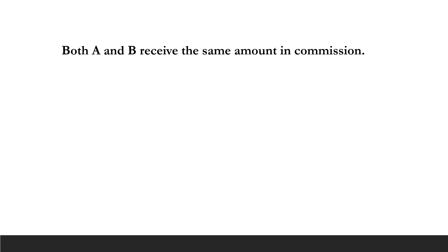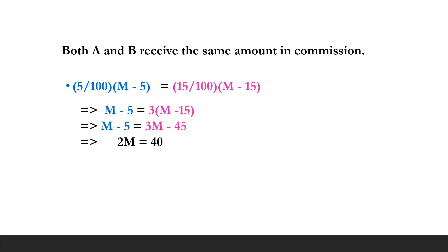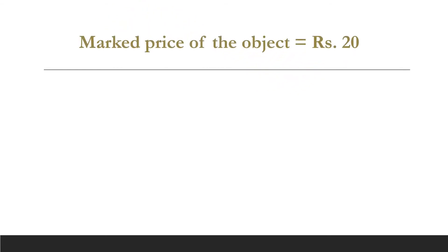The question also says that both A and B receive the same amount in commission. So, let us equate the commission received by both Salesperson A and Salesperson B. On calculating, we get M is equal to 20. Therefore, we find that the marked price of the object is Rs 20. The right answer to the question is option B.